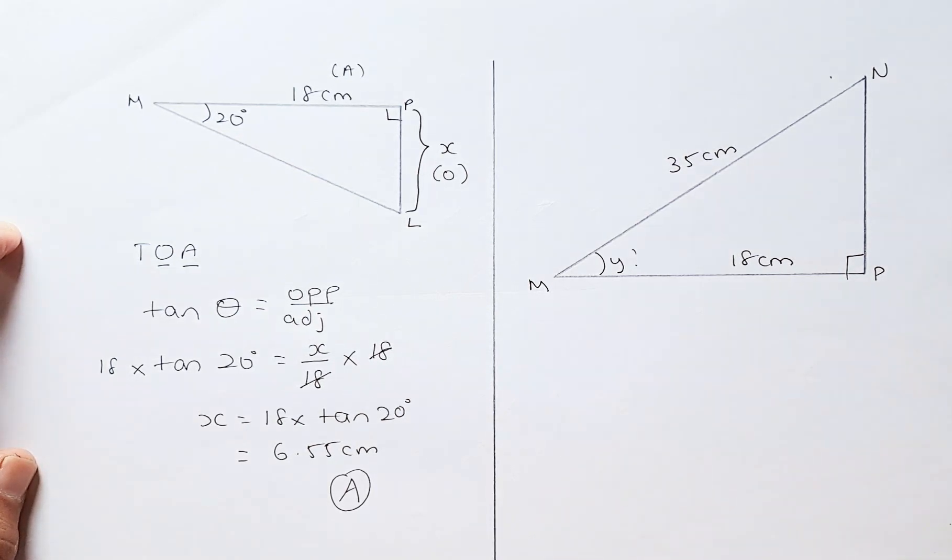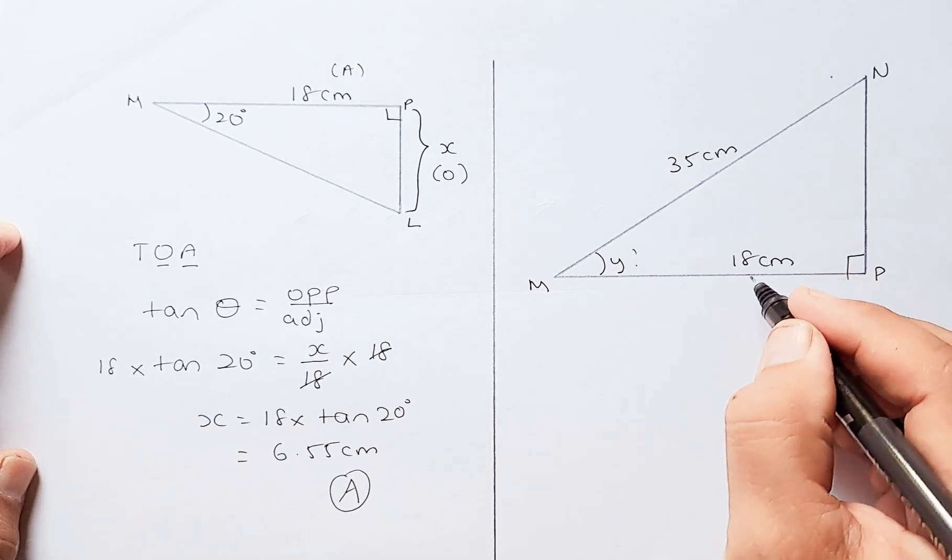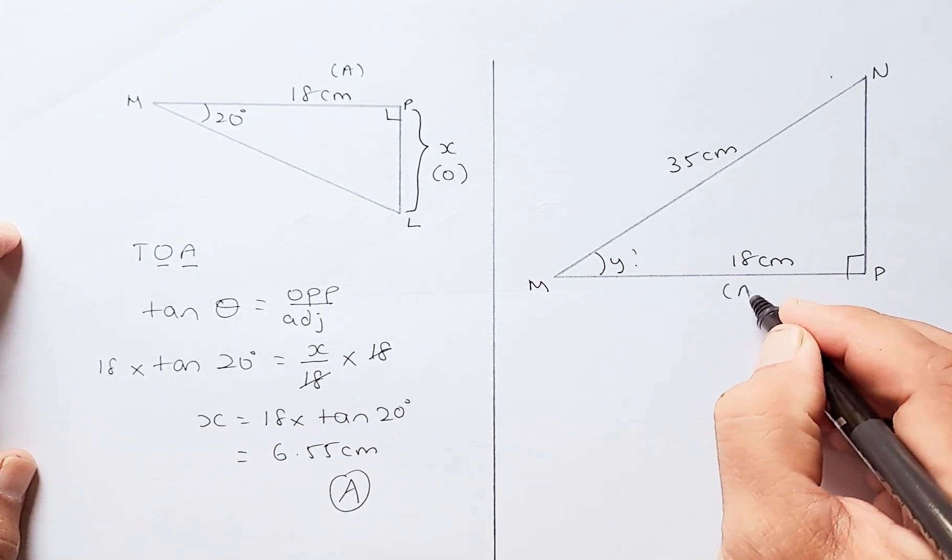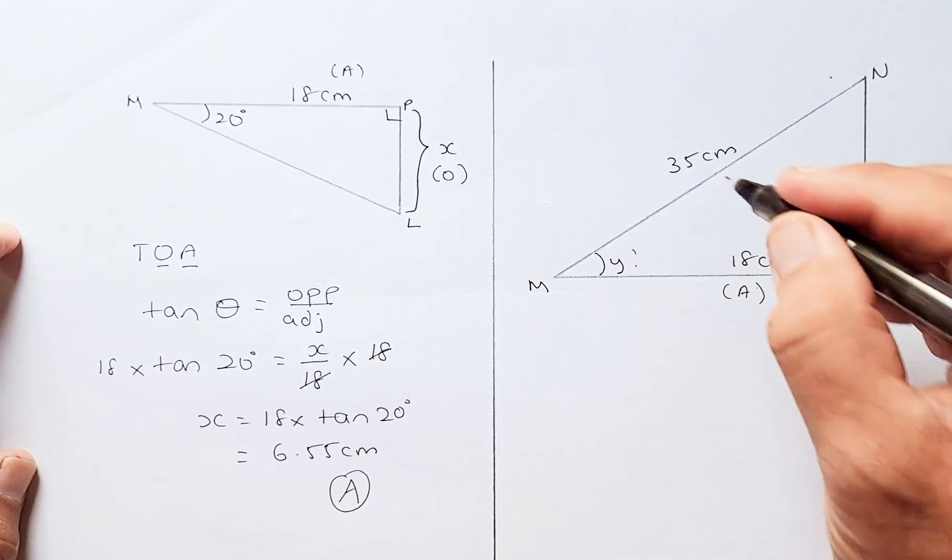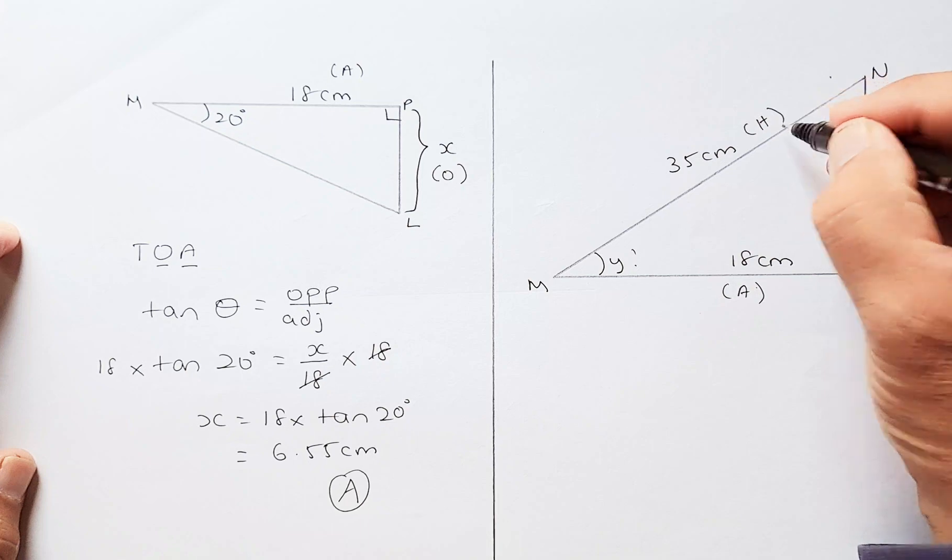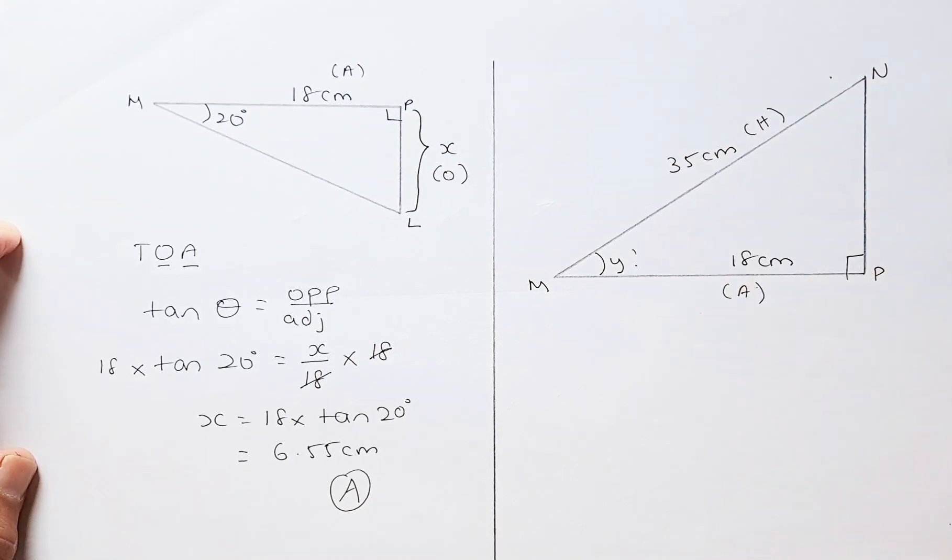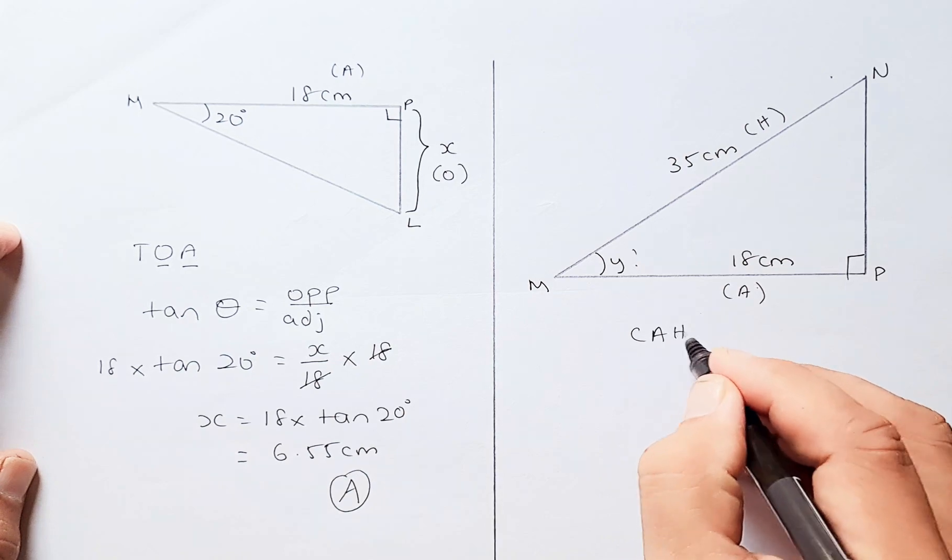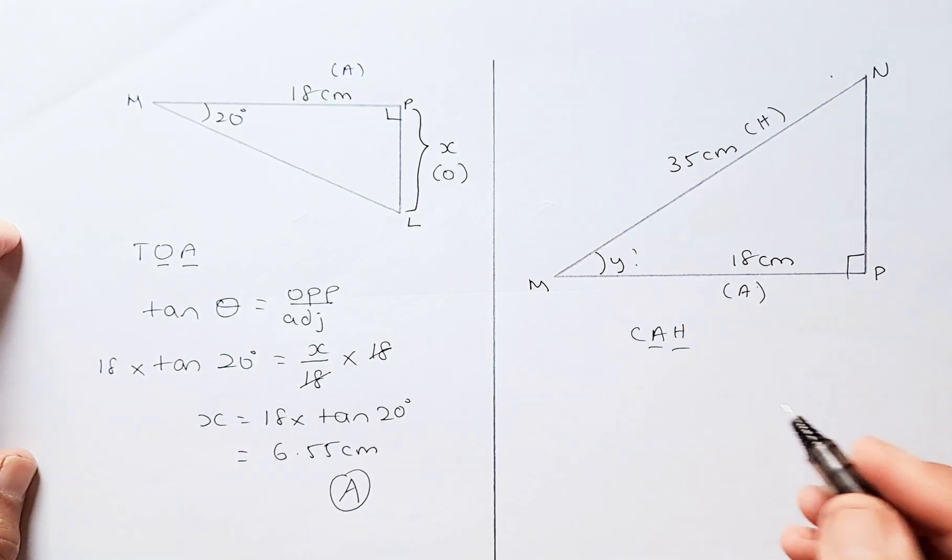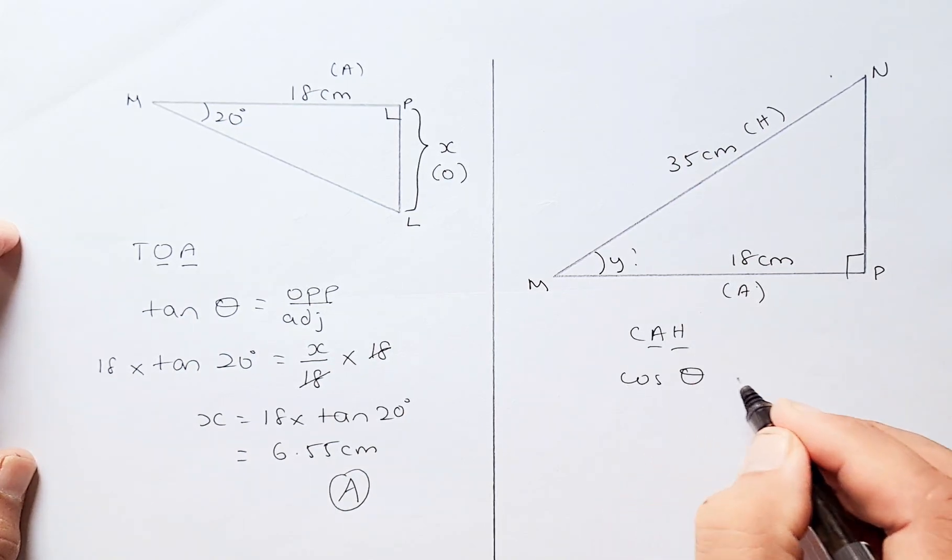the first thing you do when you do a trig ratio question, you need to label the sides. So 18 is adjacent because it's next to the angle, and 35 is the hypotenuse because it's opposite to 90 degrees. Now you have A and H, so you have to use CAH because CAH has A and H.